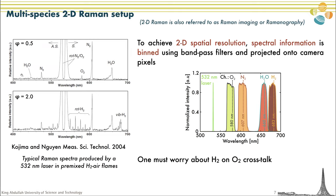On the left you'll find a typical Raman spectrum from a hydrogen flame with a laser at 532 nm, taken from the literature. Each species has a different signature at a different wavelength, so this is spectrally resolved. We want spatial resolution in 2D, so we are going to bin this spectral information using bandpass filters and project the data onto camera pixels. You can see here the different bandpasses chosen for each species. One has to be worried about crosstalk, specifically the hydrogen and oxygen bandpass crosstalk.